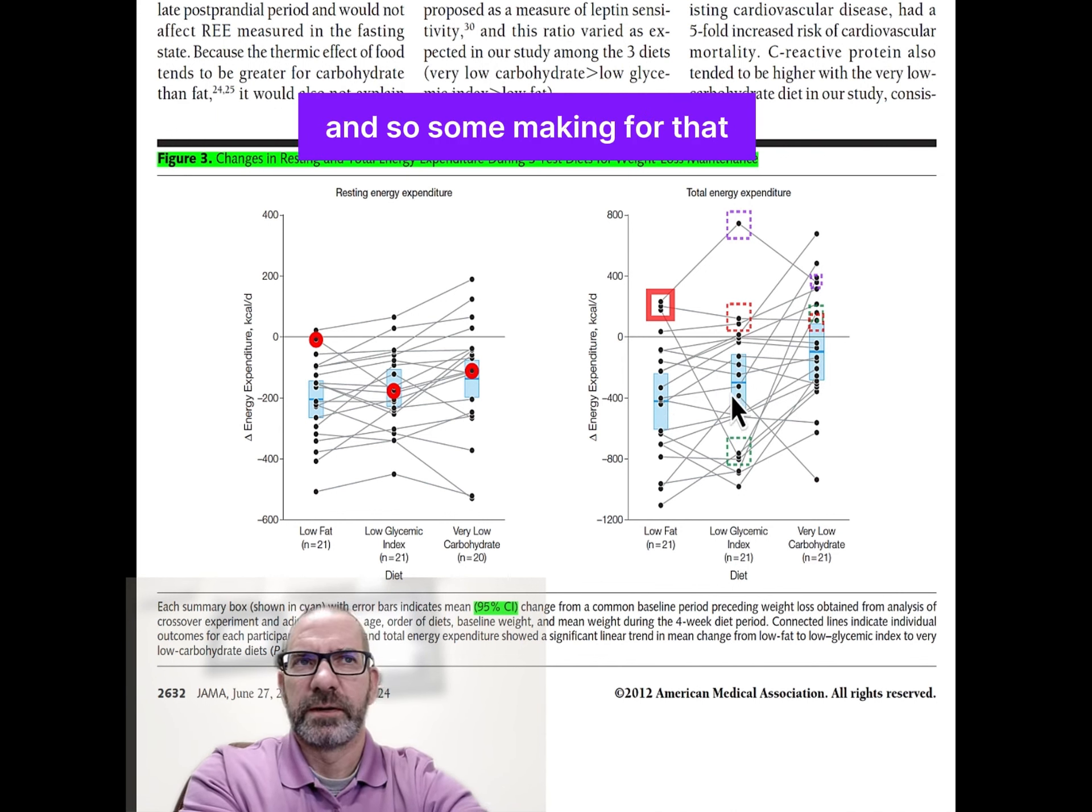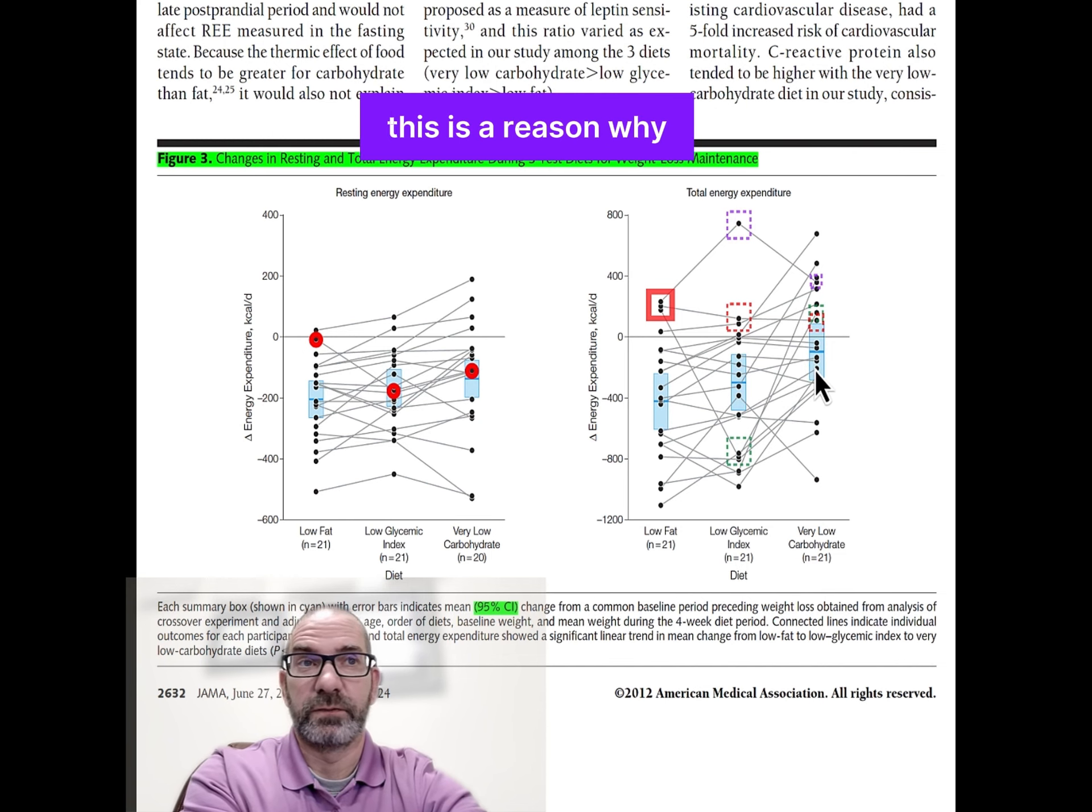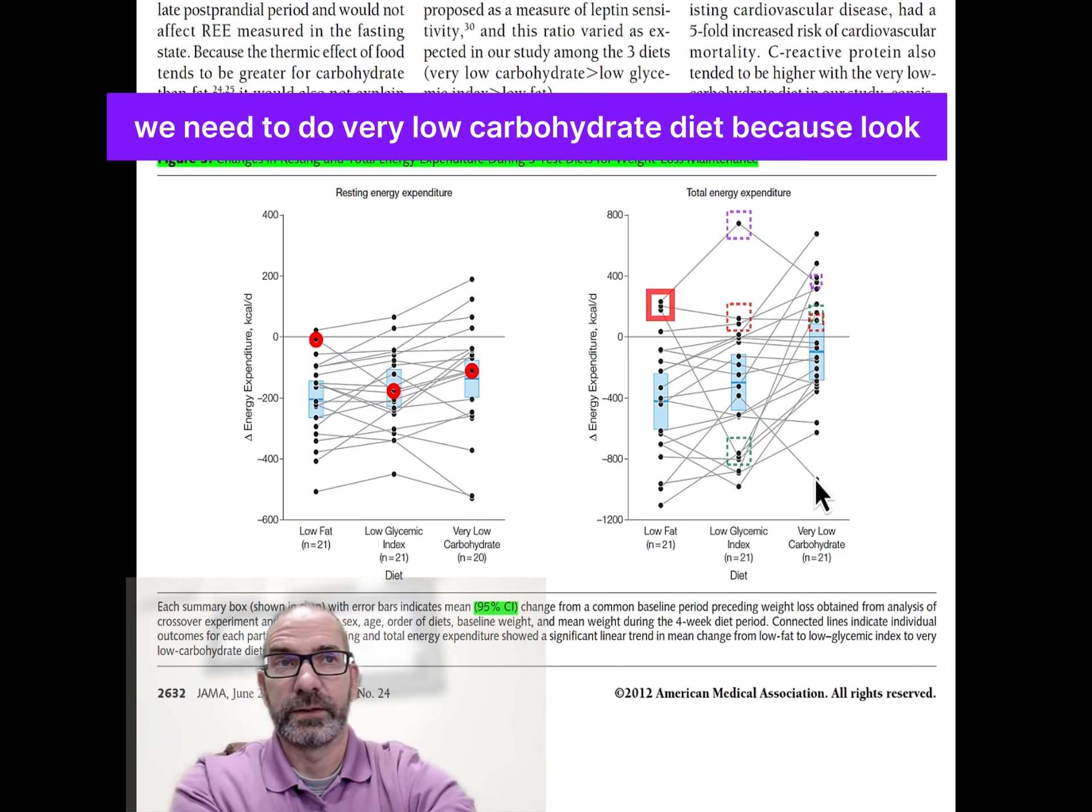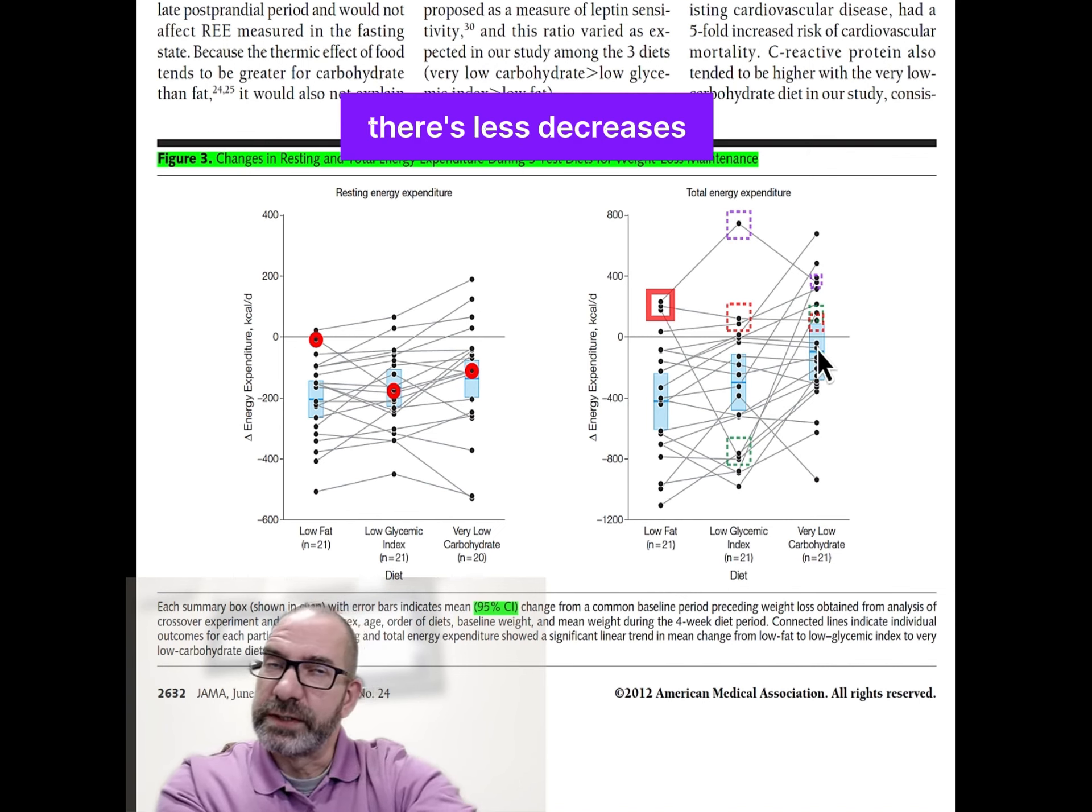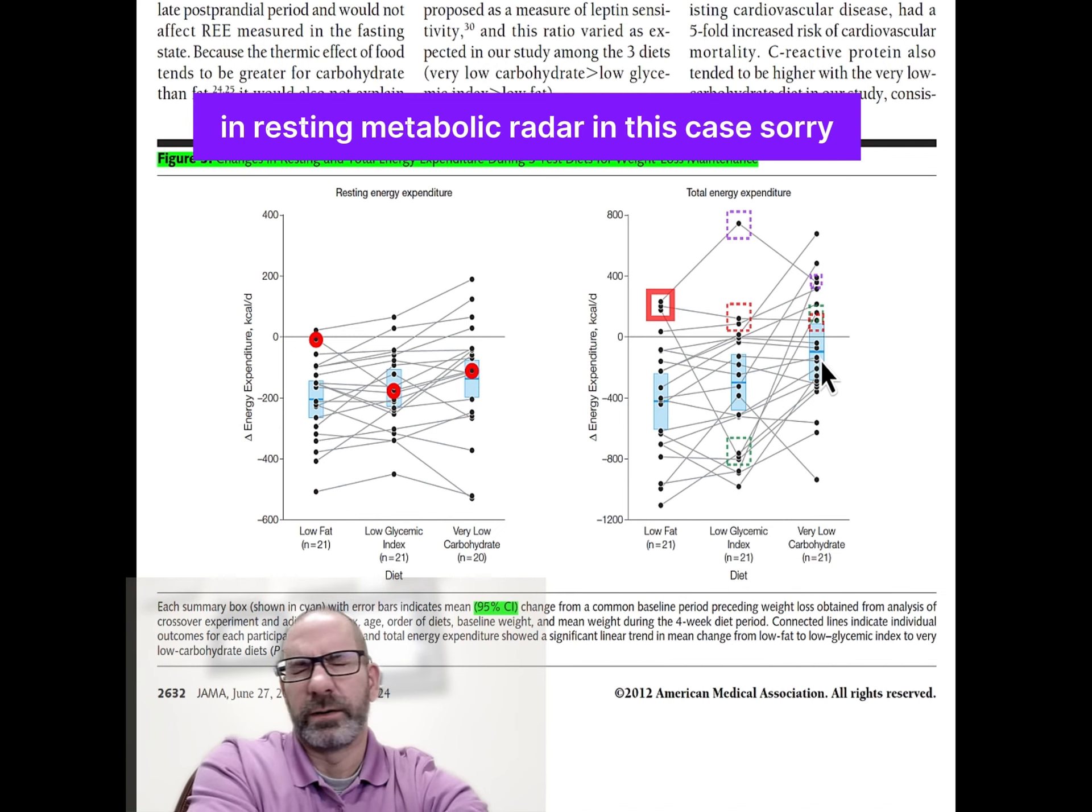Some may confer that this is a reason why we need to do very low carbohydrate diet because the average was less, there's less decreases in resting metabolic rate, or in this case total energy expenditure with this diet.